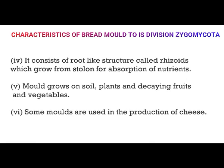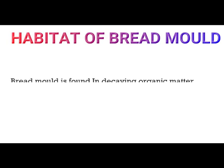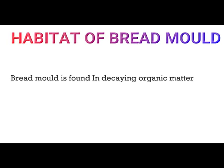Molds grow on soil, plants, and decaying fruits and vegetables. Some molds are also used in the production of cheese. Regarding the habitat of breadmold, or where breadmold is found: breadmold is found in categories of organic matter.